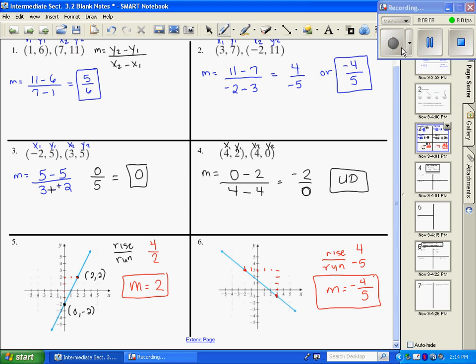Or I can name these ordered pairs, which this one is negative 2, 3. And this one right here is 3, negative 1. And use my slope formula. M equals y2 minus y1 over x2 minus x1. And solved it that way.